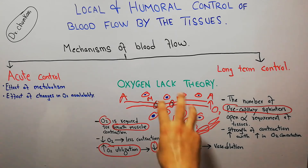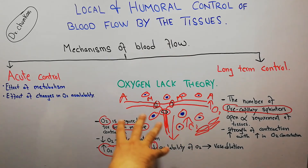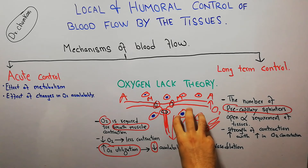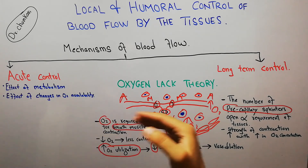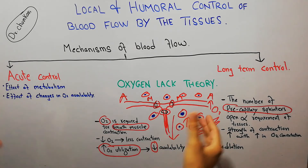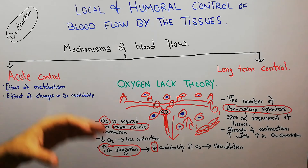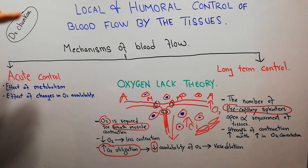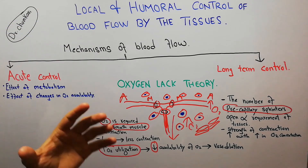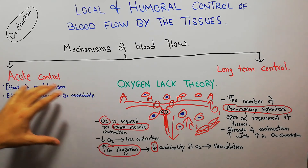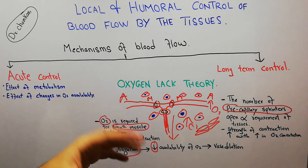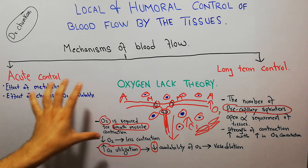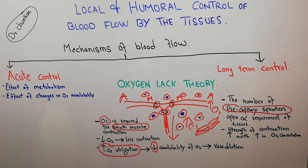The oxygen lack theory explains a mechanism for acute, rapid control of blood flow. For example, during exercise, muscles consume more and more oxygen, so more sphincters open and blood flow increases rapidly within seconds to minutes. This acute control, previously explained by the vasodilator theory, is also explained by the oxygen lack theory.